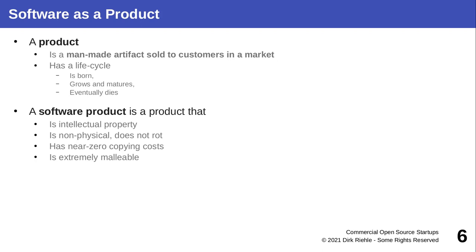In all of this, software exists as a product. A product is a man-made artifact that's being sold to customers in a market. The underlying idea is that there is this product which, cookie-cutter style, can be replicated and repeatedly sold without much variation to a market including many customers, not just one. A software product is such a product, but more specifically a product that is pure intellectual property. It's wholly virtual, it's not physical, which has some nice properties — it doesn't rot, for example.